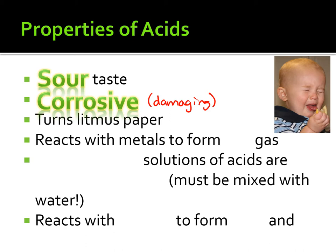Our fourth bullet point is that acids react with metals to form hydrogen gas. We've done this in class — when we put zinc, aluminum, or magnesium metals in hydrochloric acid, they bubble and give off gas. That gas is always hydrogen gas, H2.